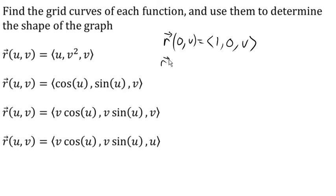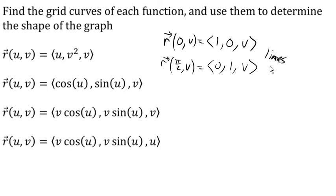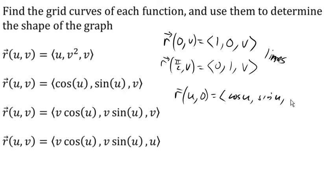Let's try pi over 2: cosine of pi/2 is 0, sine of pi/2 is 1, and v. So we're getting lines in the z direction at different values of x and y. Now letting v be constant — if v equals 0, we'd get (cos u, sin u, 0). The x and y have a sine-cosine pair, which suggests rotation, so we're probably going to get a circle.